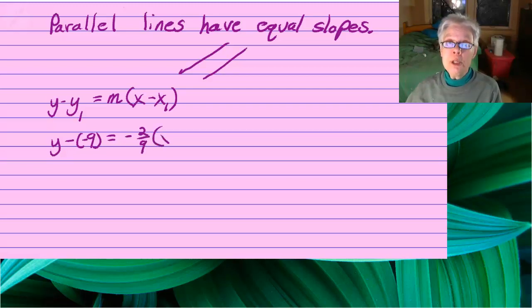I substitute the appropriate coordinates in y1 and in x1. y minus negative 9 is going to be y plus 9. Meanwhile, let us not forget that the point is 6, negative 9.